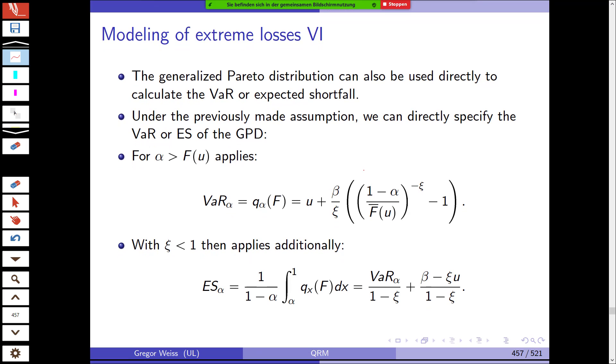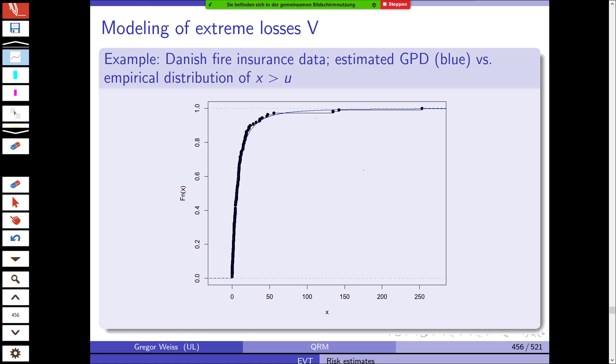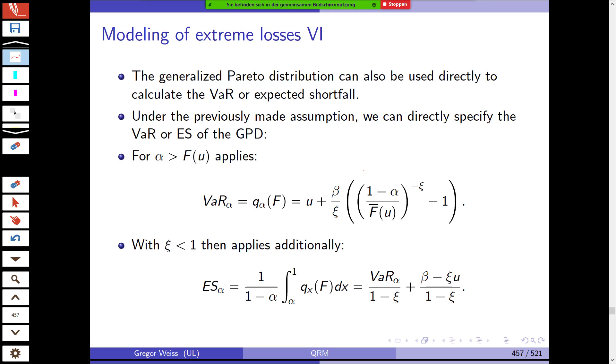Now, the generalized Pareto distribution can also be used directly to calculate the value at risk or expected shortfall. As is tradition in quantitative risk management, we first fit a model to the data and then make a forecast. We're trying to see what the next extreme loss could look like. With the generalized Pareto distribution, this is very simple. You can take the alpha quantile or the value at risk by using u, beta and xi. You simply insert into these formulas. Just like with the normal or student t distribution, you get an analytical formula for VaR and expected shortfall.